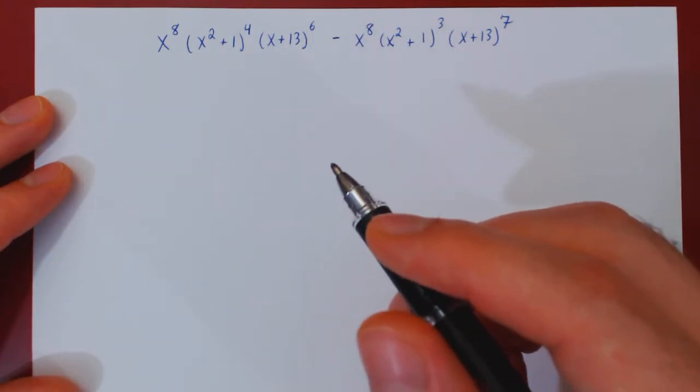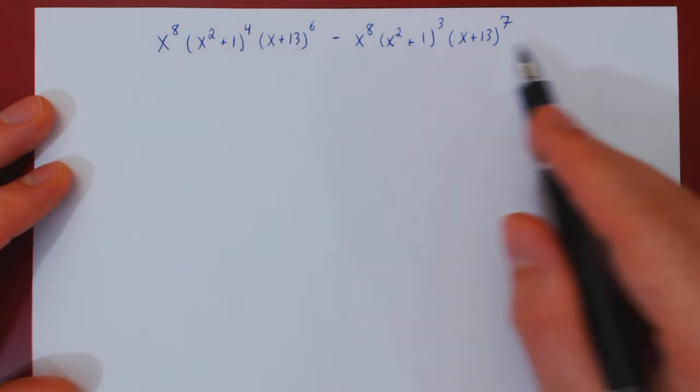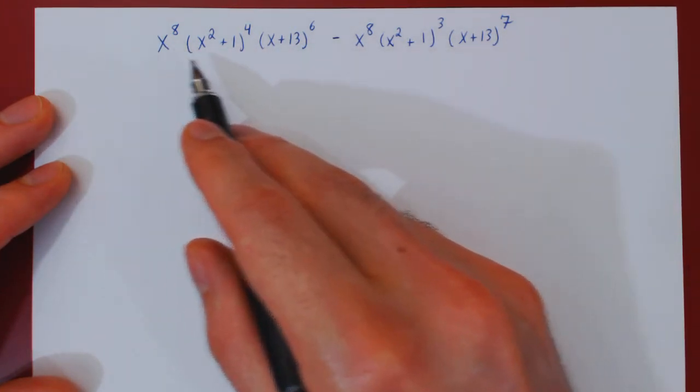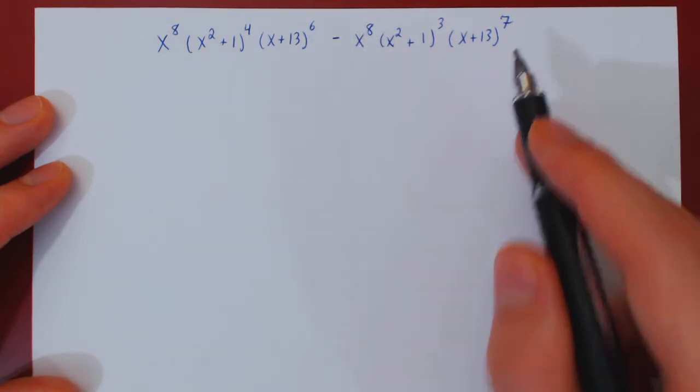Okay, so in this video, we want to factor and simplify as much as possible the following difference of terms. We have this term, which is fully factored, minus this other term, which is also fully factored.